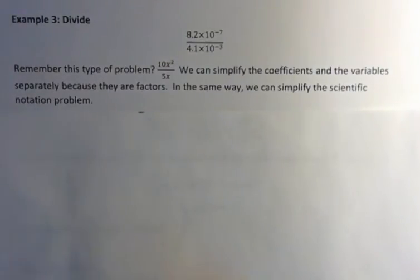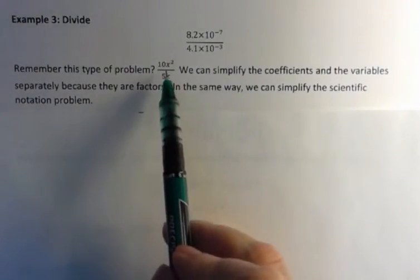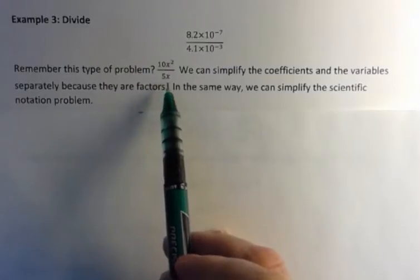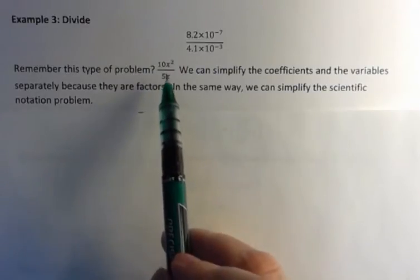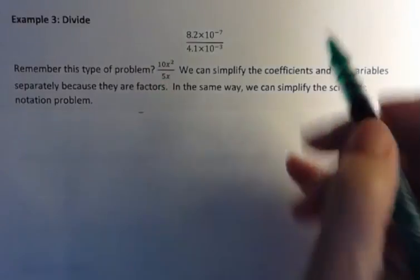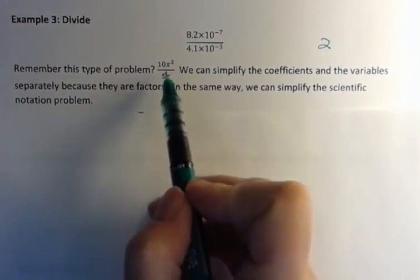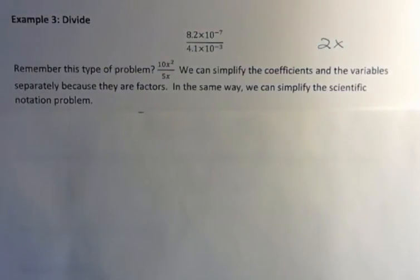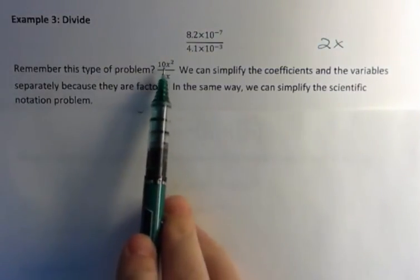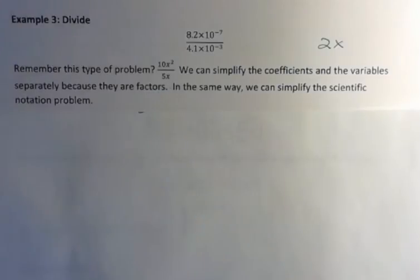Remember the type of problem from before where you have 10x² over 5x, and we could simplify the coefficients and the variables separately. So we could say 10 over 5 is 2, and then we have more x's on top, so we get x. We can simplify that because we have factors. 10 and x² are factors, and 5 and x are factors.